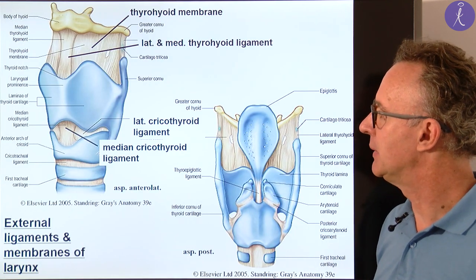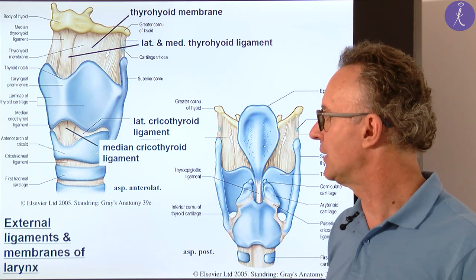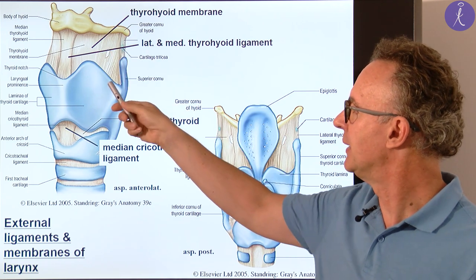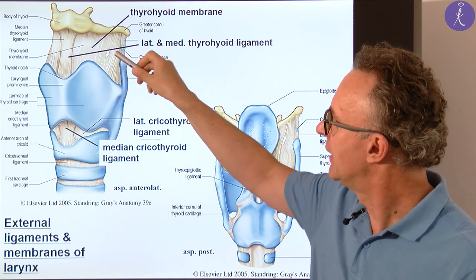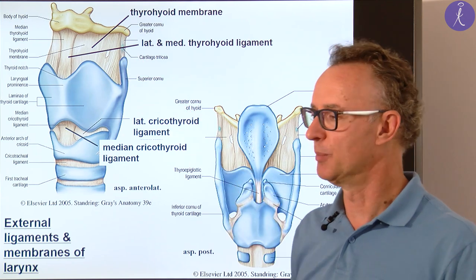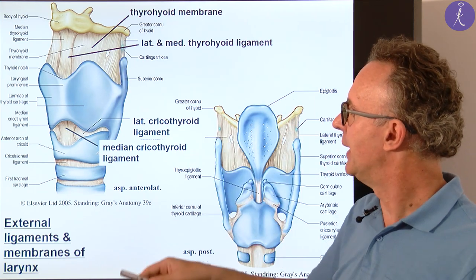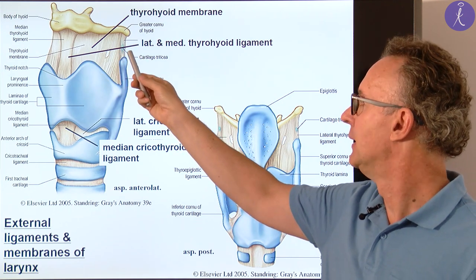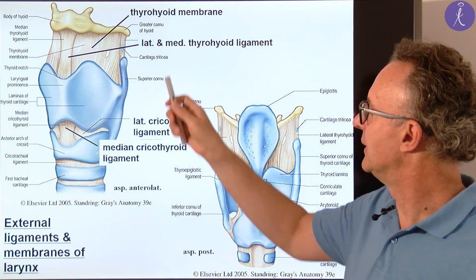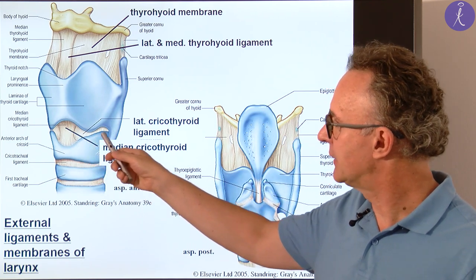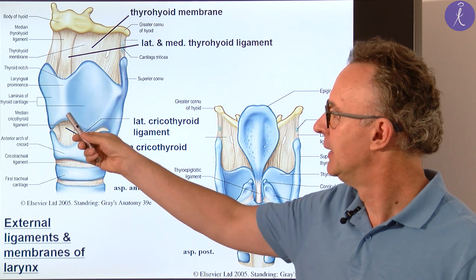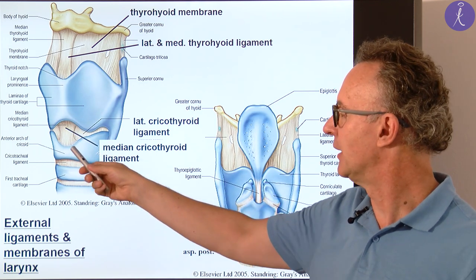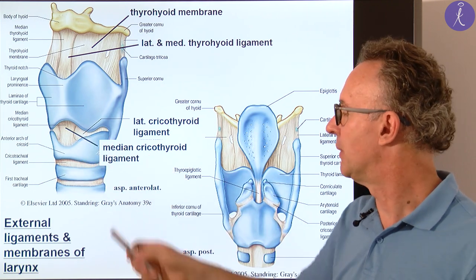I'd like to describe some membranes and ligaments on the outer surface and also on the inner. The external ligaments and membranes: on the top, between the hyoid bone and the thyroid cartilage, we have the thyrohyoid membrane, having a small foramen on each side for the superior laryngeal structures such as the superior laryngeal nerve, superior laryngeal artery, and vein. We have a reinforcement in the midline as the median thyrohyoid ligament, and also laterally a small ligament. More important is the lower part regarding the membranes and ligaments between the thyroid cartilage and the cricoid cartilage arch.